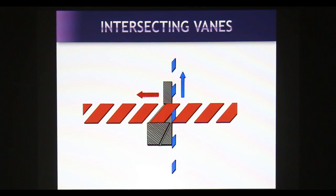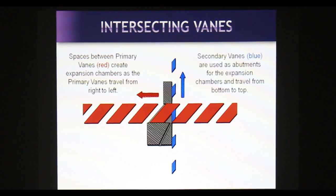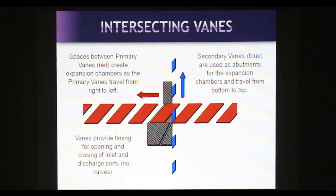To recap our understanding of the concept of intersecting vanes: the spaces between the primary vanes create expansion chambers as the vanes travel from right to left. The secondary vanes are used as abutments for the expansion chambers and travel from bottom to top. The vanes provide timing for the opening and closing of inlet and discharge ports, and there are no valves. All of the vanes move in a continuous direction.